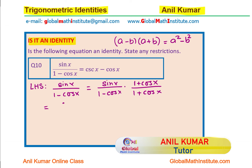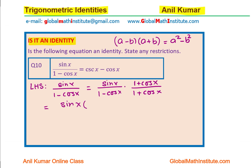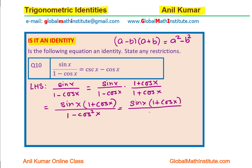Now we can simplify and rewrite the expression as sin x times 1 plus cos x in the numerator, and the denominator will be 1 minus cos squared x. Now, what is 1 minus cos squared x? Well, 1 minus cos squared x is sin squared x. So we get sin x times 1 plus cos x in the numerator, divided by sin squared x.